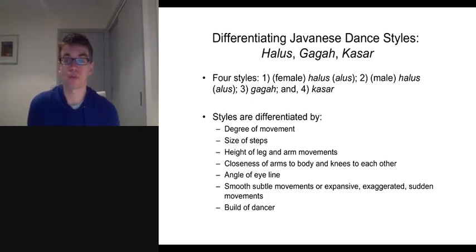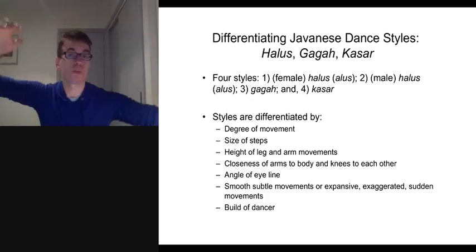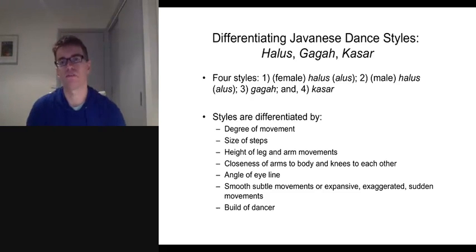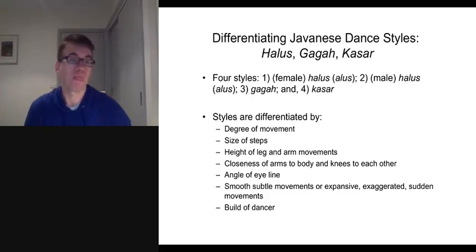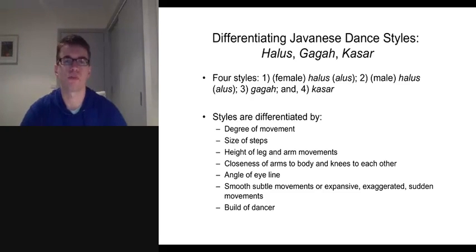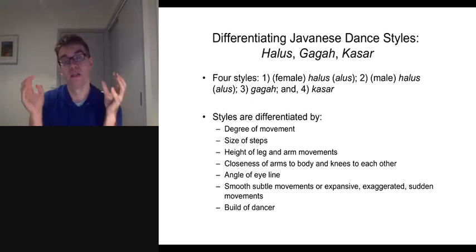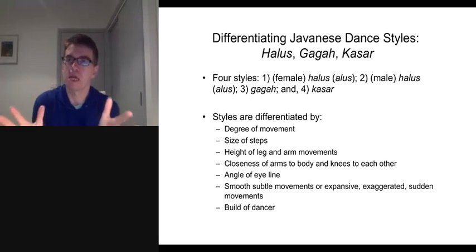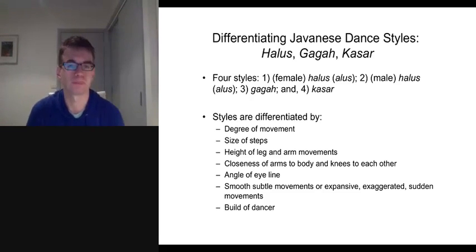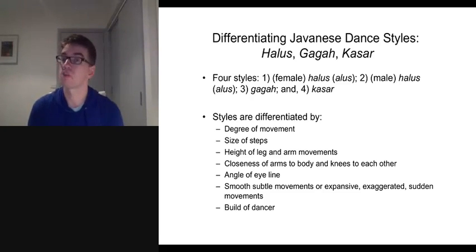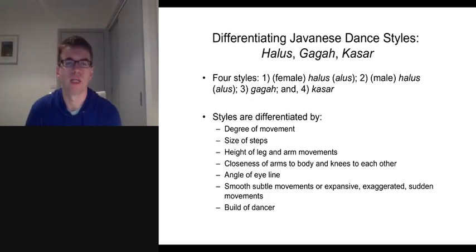The height of arm and leg movements are also a giveaway when it comes to Alus or Kasar performance styles. Arm movements might be quite broad for Kasar, and legs might be positioned very far apart, but the opposite is true for Alus styles. The closeness of arms to the body would also denote more of an Alus style than a Kasar performance approach. In Kasar style, the performer might look more towards an audience than in an Alus style. Alus styles are very subtle, smooth, and expressive, whereas Kasar styles are more sudden and perhaps a bit jerkier.